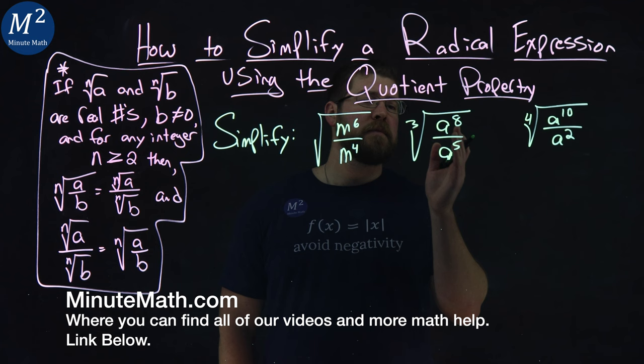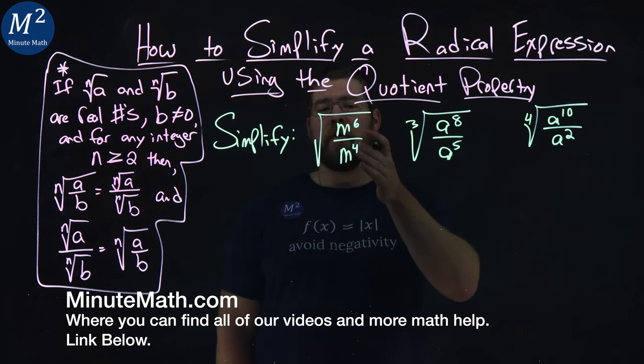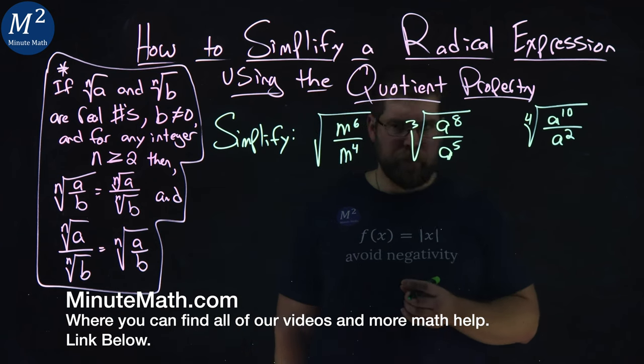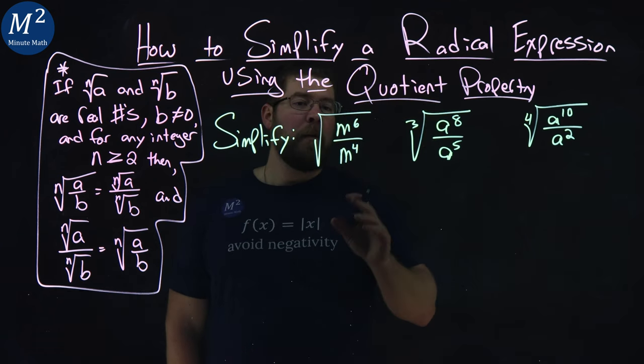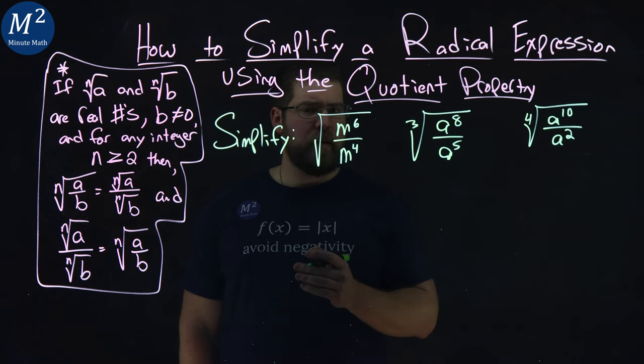We're given three problems here and we want to simplify. Our first one: the square root of m to the sixth power over m to the fourth power. My rules allow me to simplify underneath the square root first. In this case, that's probably the best option.